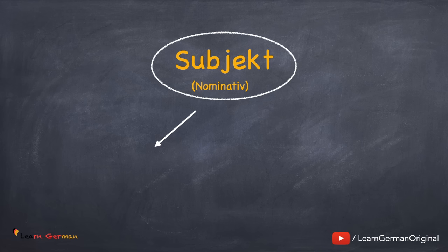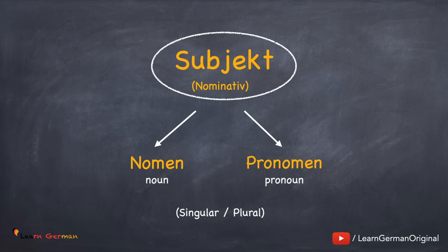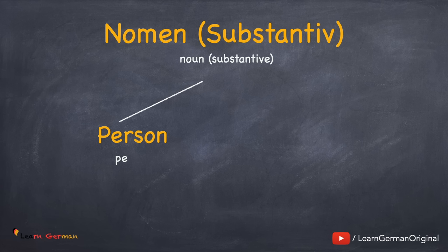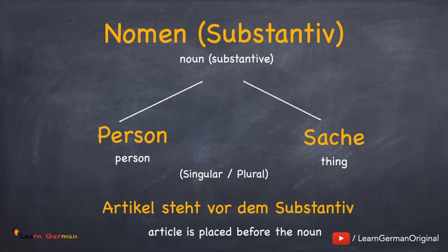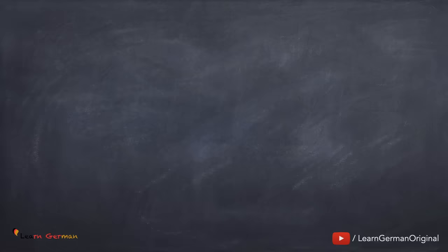The Subjekt can either be a Nomen or a Pronomen, which can either be singular or plural. In lesson 11, we already did pronouns. Now, let's move on to the noun. Nomen, also known as Substantiv, can either be a person or Sache. These can also be either singular or plural. A noun is always accompanied by an article. This article is placed before the noun. Let's look at two examples for Person und Sache.